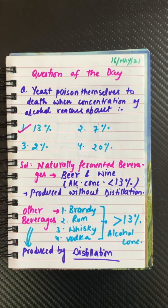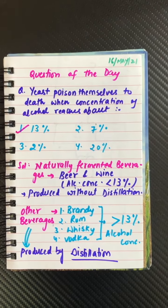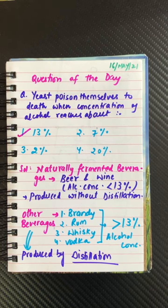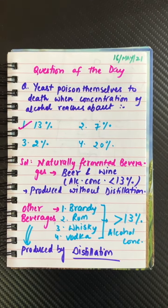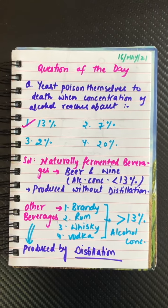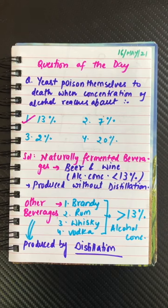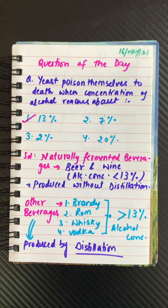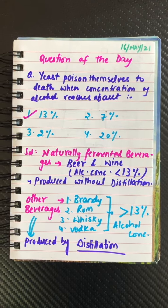As you know very well, the naturally fermented beverages like beer and wine have alcohol concentration of less than 13%. For example, in beer it is around 3–6% and in case of wine it is around 9–12%. Their alcohol concentration remains below 13% and they are produced naturally with the help of yeast, without distillation. If the alcohol concentration is more than 13%, it will lead to the killing of yeast.